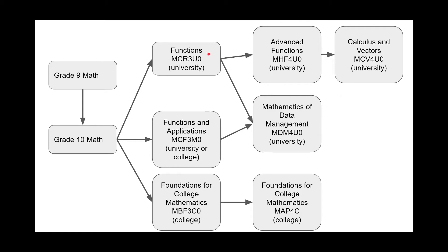While we're talking about this pathway, calculus and vectors MCV4UO is sometimes a course that universities require, in particular for engineering or mathematics programs. This is a course that's taken after advanced functions—usually advanced functions is in semester one and calculus and vectors is in semester two. The only way to get into calculus and vectors is through advanced functions.